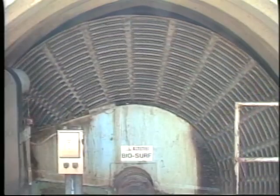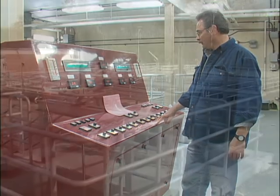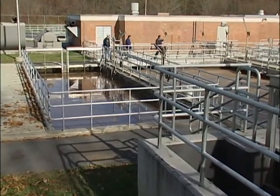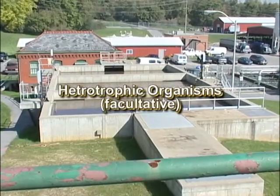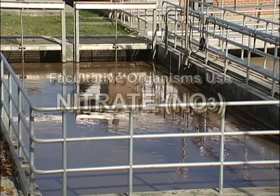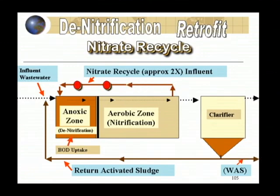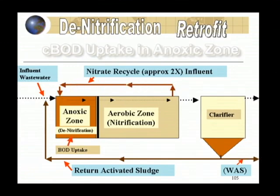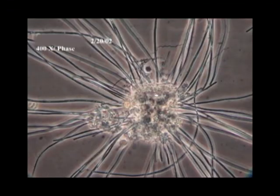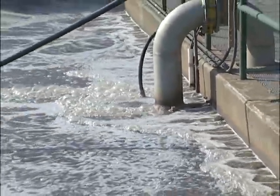In fixed film installations, you may find a denitrification filter being used. In cases where total nitrogen limits are quite low, you may see multiple anoxic zones. In the anoxic zone, heterotrophic facultative organisms search for another electron acceptor when elemental oxygen is depleted — in this case, the organisms will use nitrate. The nitrate is obtained by a recycle flow from the end of the aerobic zone. In the anoxic zone, there is a significant uptake of CBOD, which tends to starve filamentous organisms of their food source and allows for the growth of nitrifying organisms in the aerobic zone.